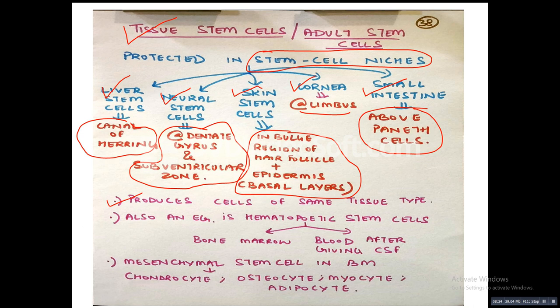An example is hematopoietic stem cells, present in the bone marrow and also in the blood after administration of colony stimulating factors (CSF). Mesenchymal stem cells are present in the bone marrow and give rise to chondrocytes, osteocytes, myocytes, and adipocytes.